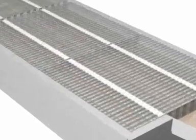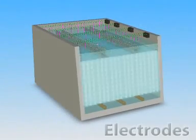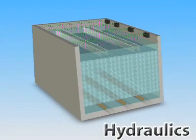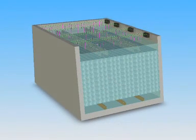The Megawater System includes three main subsystems: Electrode Modules, Hydraulic Components, and the Electricity Management Unit.